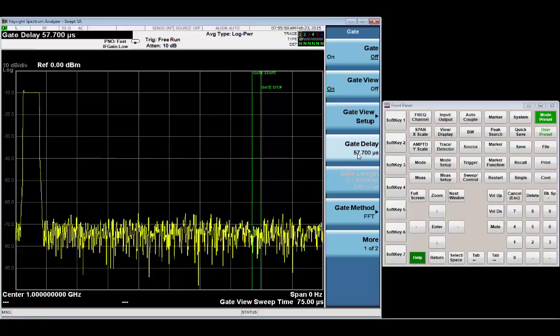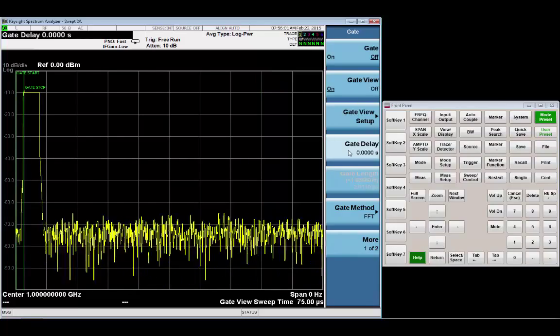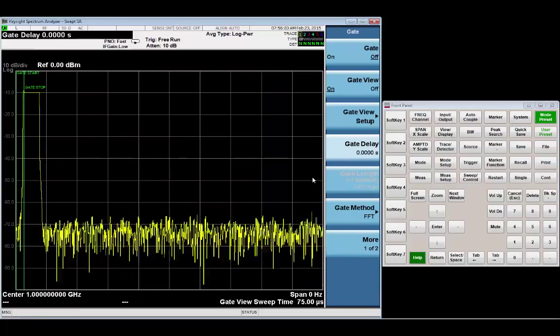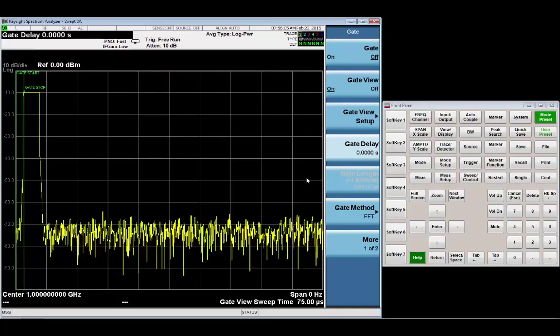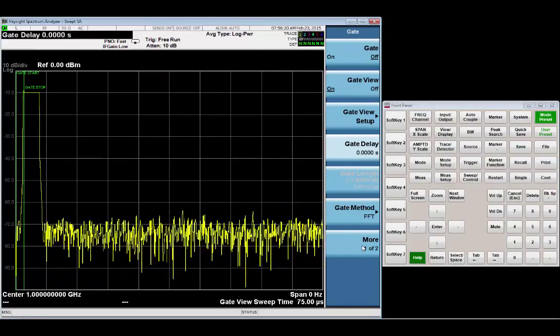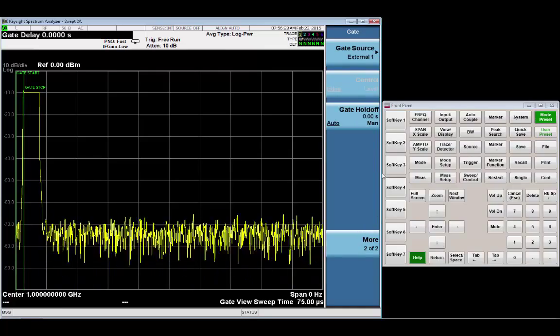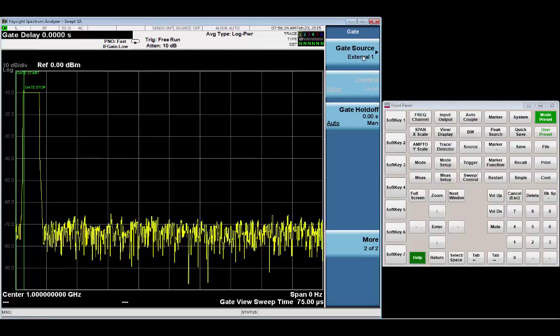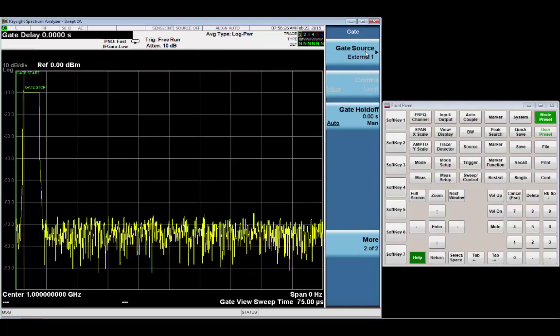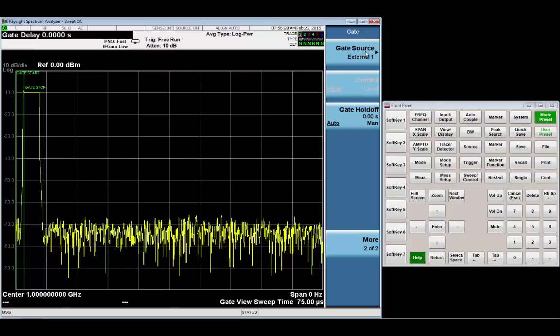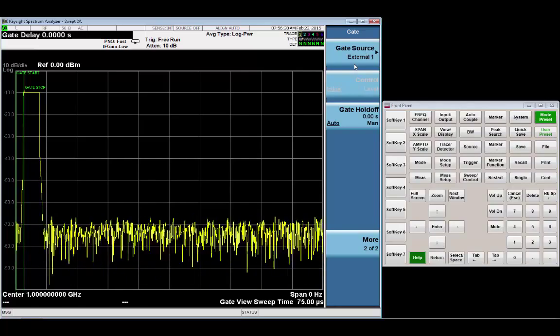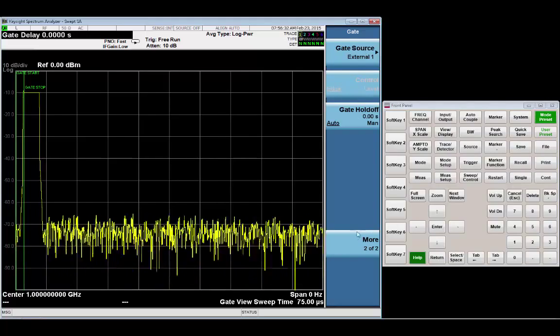Now, I'm going to go to a gate delay of 0. And you'll see my start and stop, my gate start and stop move over. Now, for the triggering of this measurement, I'm going to use gate source external 1. You could also use a periodic timer trigger, but for this example, I'm going to use the external trigger. Either one will work.